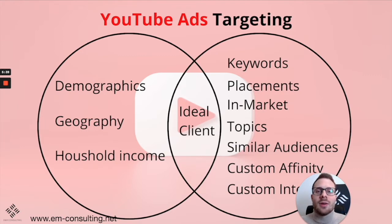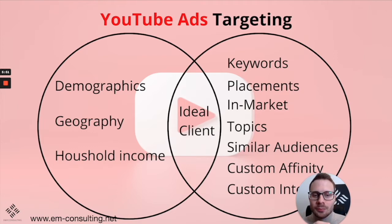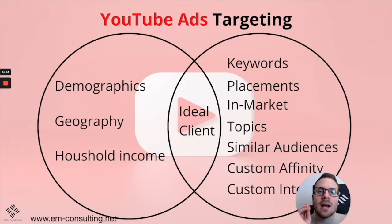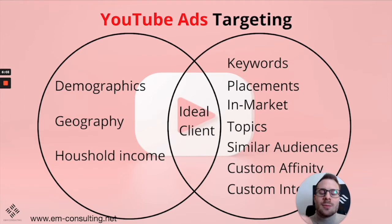Targeting competitor placements is a very good beginner strategy. As you're starting out with YouTube ads, keywords, placements, and custom affinity audiences are the three best targeting options for beginners. Then there are also in-market audiences, topics, and similar audiences — similar audiences work just like a lookalike audience on Facebook; on YouTube and Google it's called a similar audience.